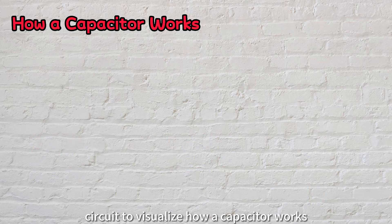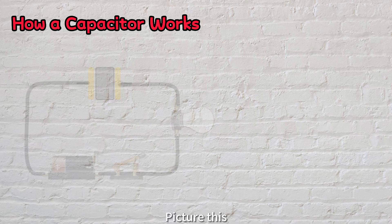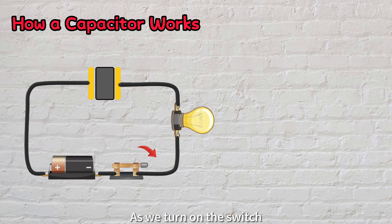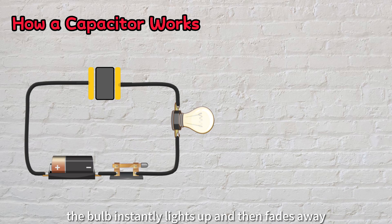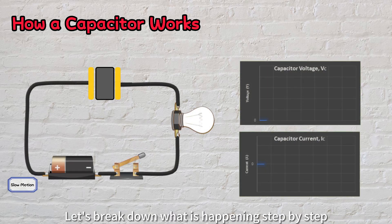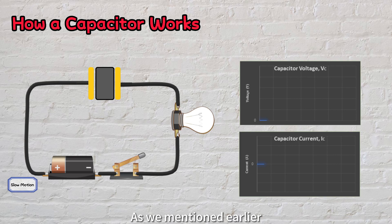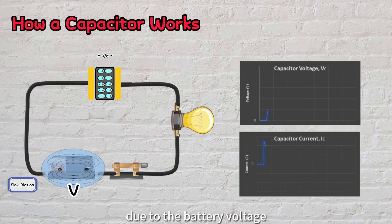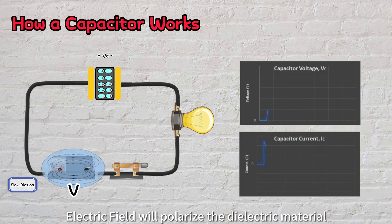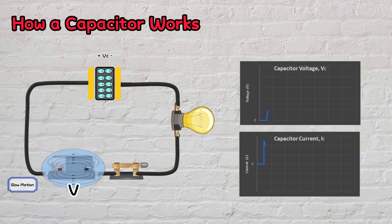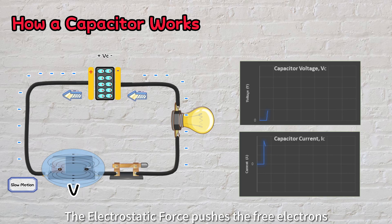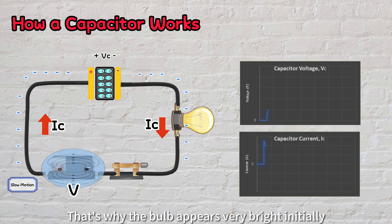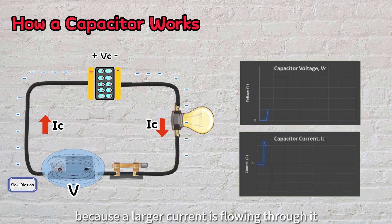Let's use a simple circuit to visualize how a capacitor works. Picture this: a capacitor and a light bulb connected in series to a battery. As we turn on the switch, the bulb instantly lights up and then fades away. As we mentioned earlier, when we turn on the switch, an electric field builds up and propagates throughout the circuit loop due to the battery voltage. The established electric field polarizes the dielectric material. The electrostatic force pushes the free electrons, producing a current flow, and charges gather on the plates of the capacitor. That's why the bulb appears very bright initially, because a larger current is flowing through it.